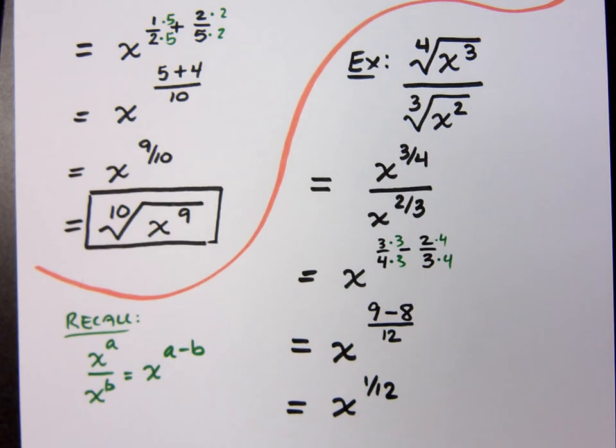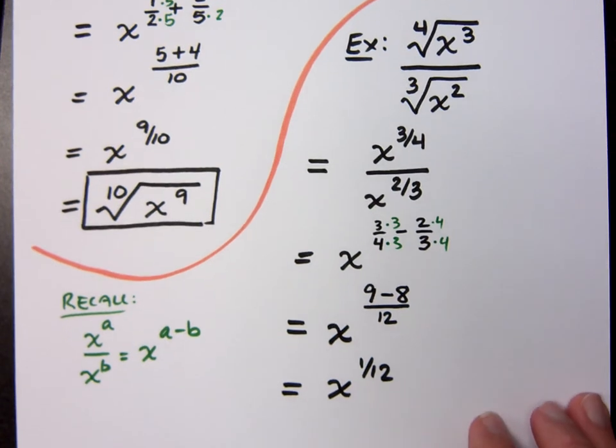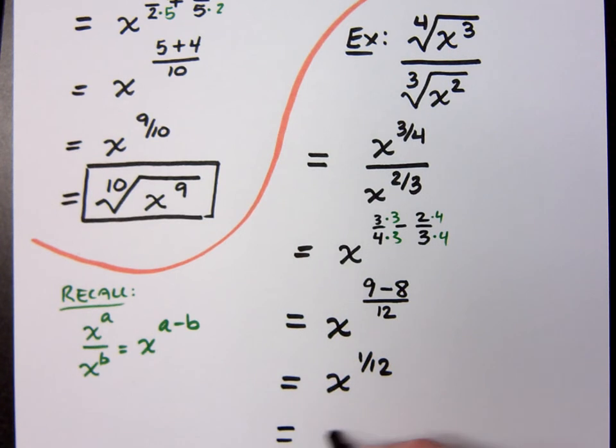So we have X to the one-twelfth. I want to write this as a single radical, so what does that guy look like? I read X in the inside, twelve on the outside. Twelve to the square of X. No, we say the twelfth root of X. Of X. That's where we're going to say that.